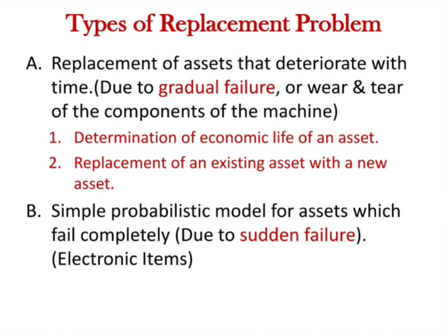In industries, we use two types of components: mechanical and electronic. We can predict mechanical component failure because mechanical components fail gradually, mainly due to wear and tear. However, electronic equipment failures occur suddenly, so we cannot predict the failure time. In this unit, we are going to learn three concepts related to replacement analysis.